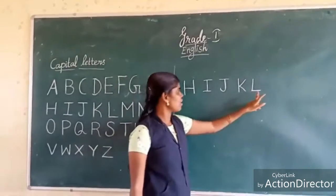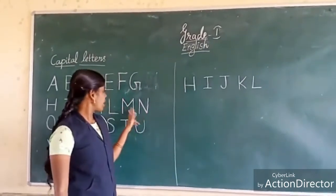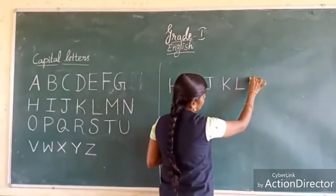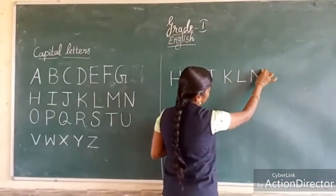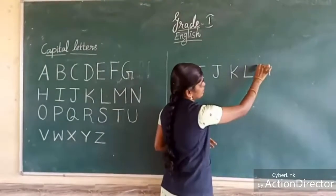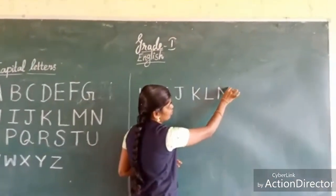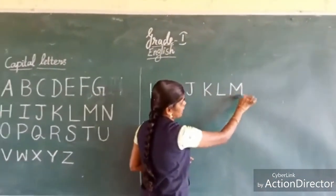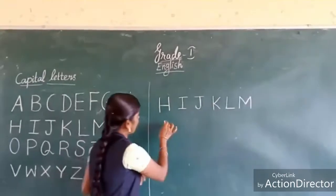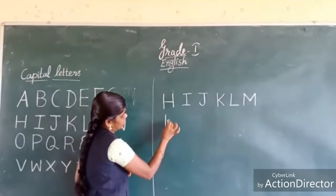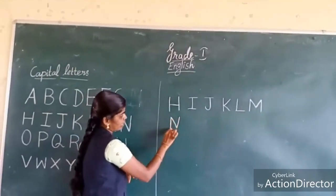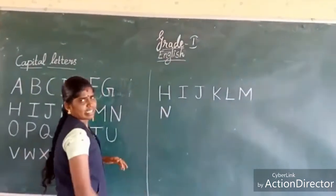We have seen H, I, J, K, L. Next, M. How do I write M? One standing line, a cross line going down to center, another cross line going back up, and one standing line. This is M.